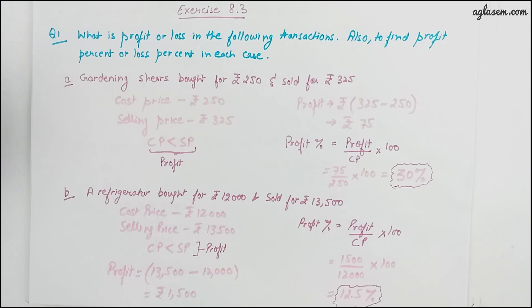Hi everyone, welcome to our channel Aglasem Schools. In this video we'll be covering the third and last exercise of Chapter 8 Comparing Quantities, that is Exercise 8.3 from the Grade 7 NCERT textbook. This exercise basically covers questions related to conversion of ratios to percentages, or to find increase or decrease in value shown by way of percentage.